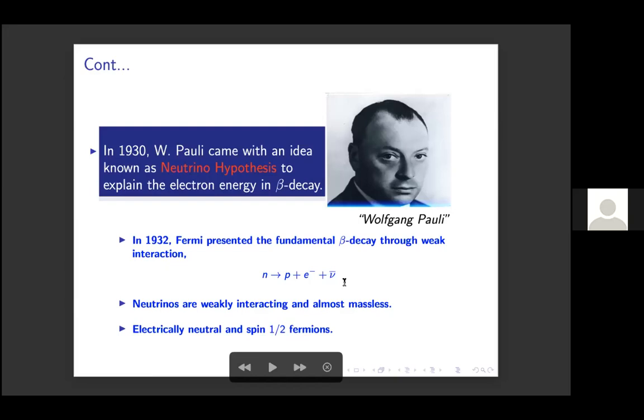Once we know the fundamental beta decay theory — where a neutron goes to a proton, electron, and to conserve charges it has to be an anti-neutrino — this anti-neutrino is very weakly interacting and almost massless, electrically neutral, and a spin-1/2 fermion.